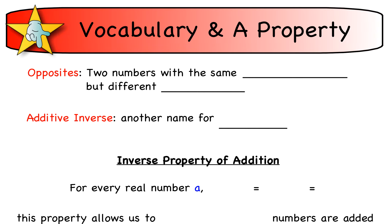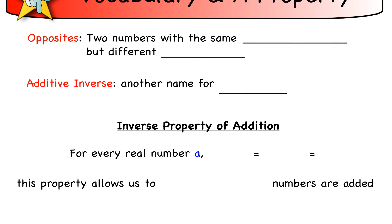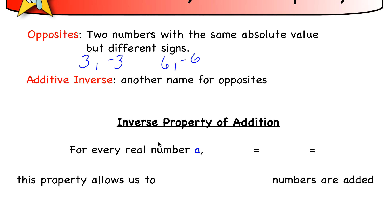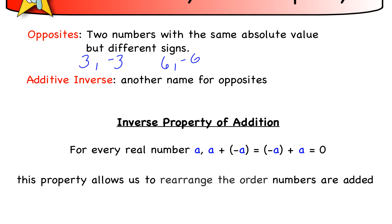A bit of vocabulary: opposites are two numbers with the same absolute value but different signs, like three and negative three, or six and negative six. The additive inverse is just another name for opposites. The inverse property of addition says that for every number A, if we add its opposite in any order, we always get zero. That property allows us to rearrange the order that numbers are added.